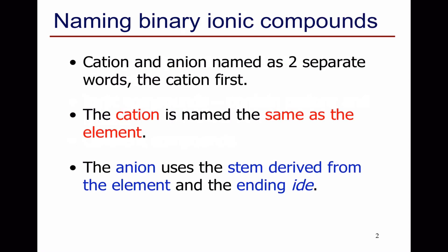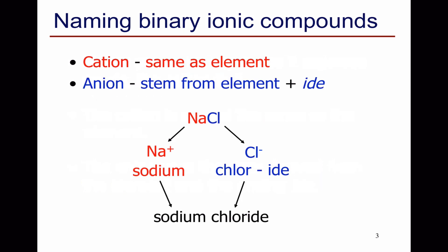So let's first look at ionic compounds. These contain a cation and anion, and the cation is named first, then a space, then the name of the anion. The cation name is the same as the element, and the anion uses the first part of the element name with the ending "-ide". So let's take NaCl as an example. The cation is sodium, and that's named the same as the element, and the anion comes from chlorine. We take the chlor part and add "-ide". We end up with the name sodium chloride.